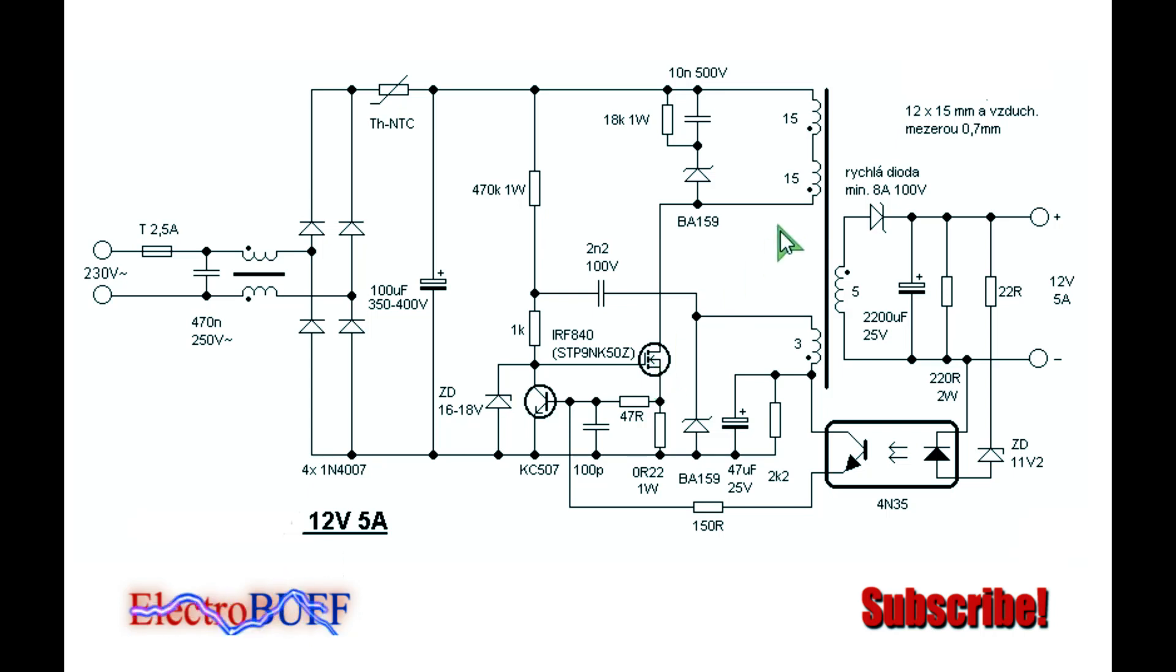So when the MOSFET turns off, all the magnetic energy stored in the core of the transformer will be transferred to the secondary side where it is rectified by this high frequency Schottky diode and filtered by this capacitor.